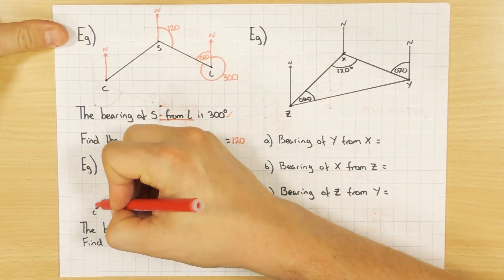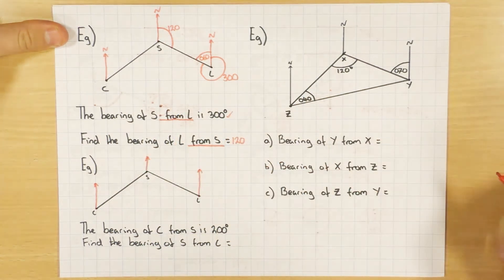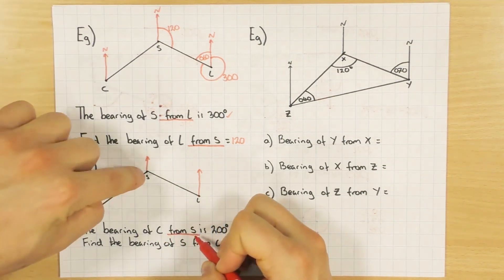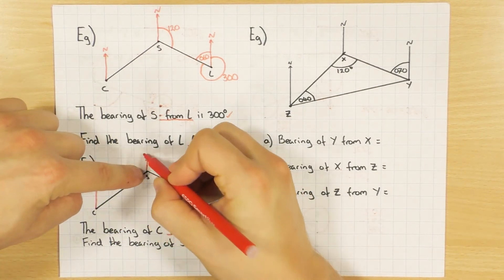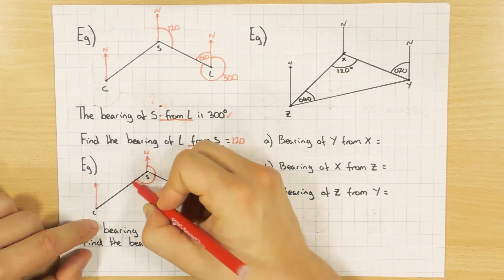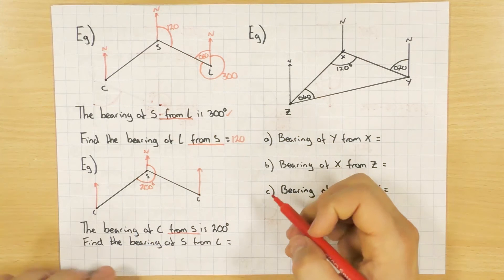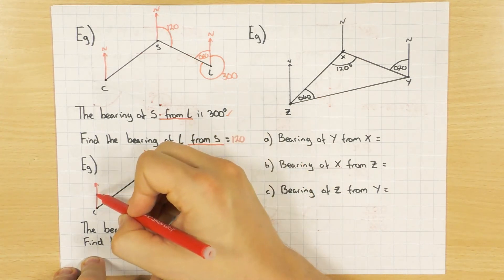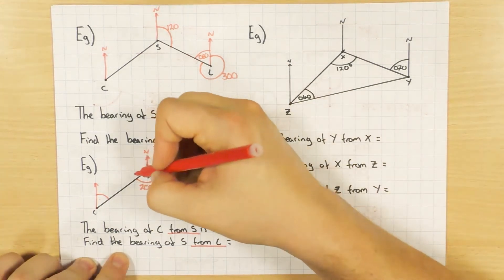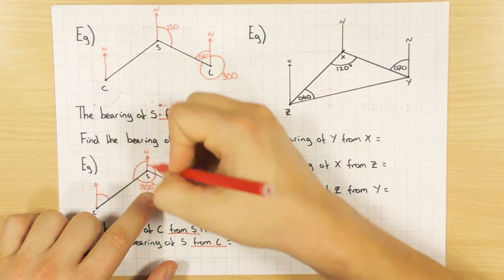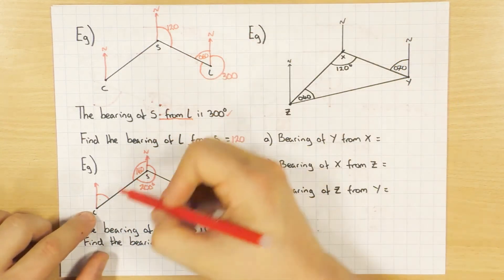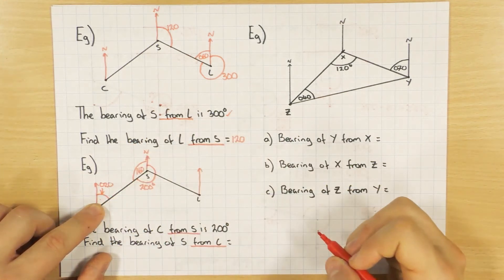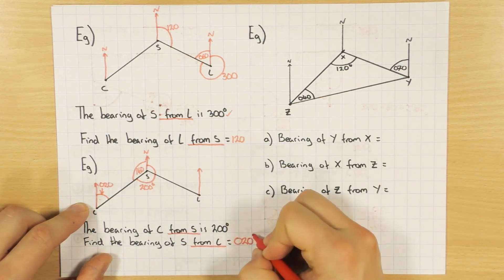Same diagram, different question. I add north lines again. The bearing of C from S is 200 degrees — from S going to C, north clockwise is 200. The question asks for the bearing of S from C. From C going to S, north clockwise: 360 minus 200 gives 160. Using the interior rule, 160 and the unknown add to 180, so that angle is 20 degrees. The bearing is 020 degrees — three figures.